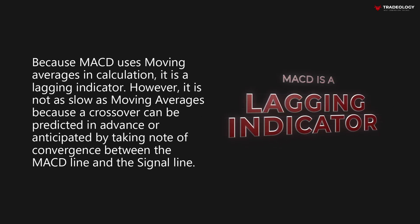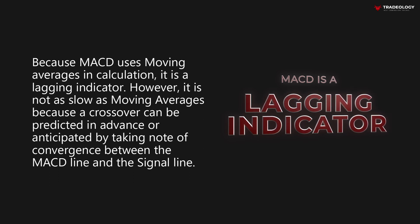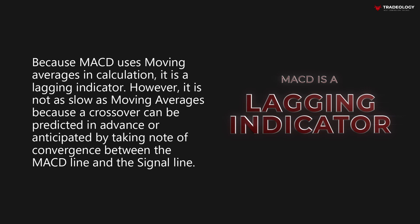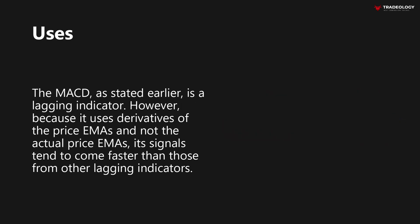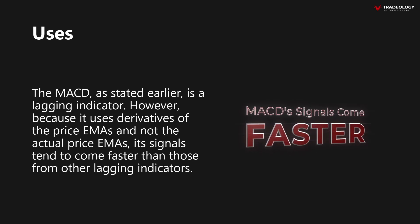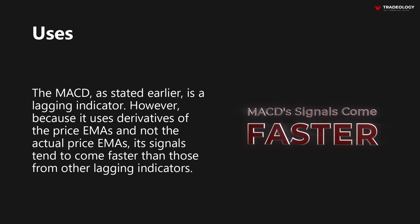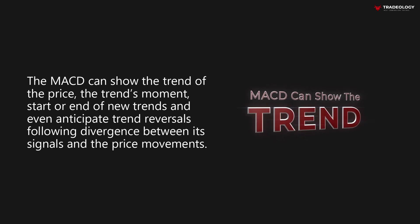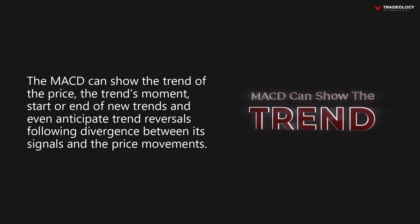Because MACD uses moving averages in its calculation, it is a lagging indicator. However, it is not as slow as moving averages because a crossover can be predicted in advance by taking note of convergence between the MACD line and the signal line. The MACD can show the trend of the price, the trend's movement, start or end of new trends, and even anticipate trend reversals following divergence between its signals and the price movements.